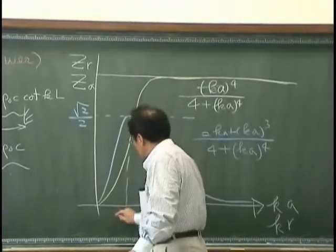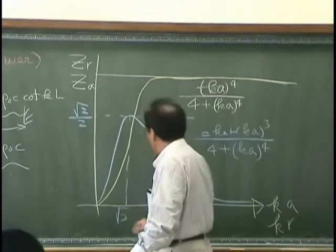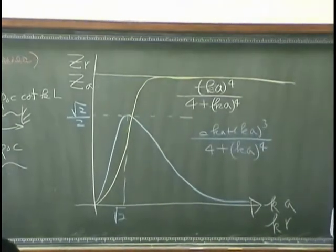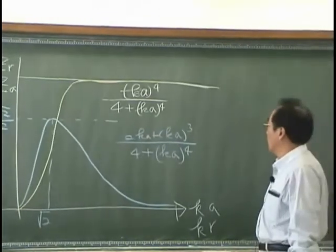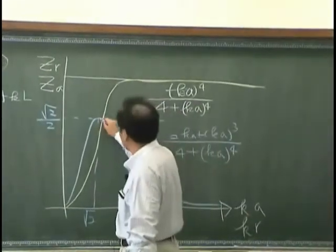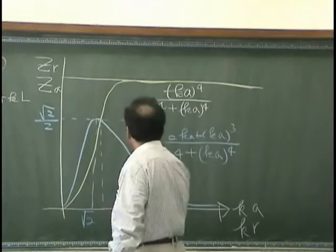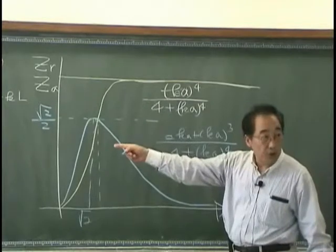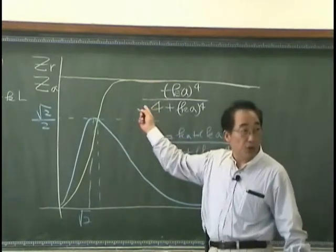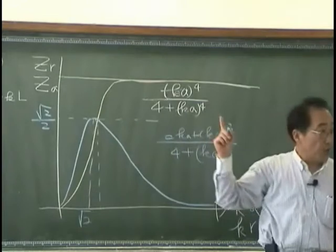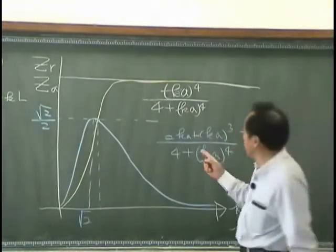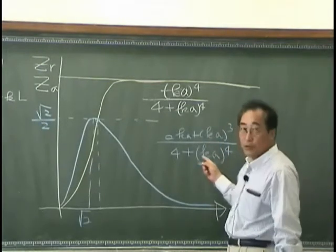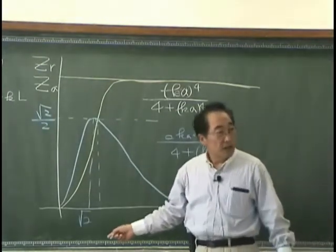When square root of 2 is over here and this point, when I put Ka equal 1 as I did for the breathing sphere, the real number would be 1 over 5. And this is 3 over 5. So, it's not 1.